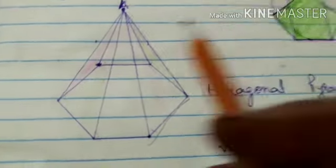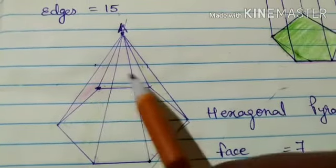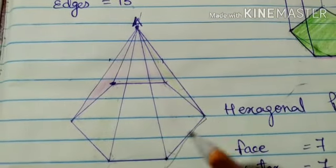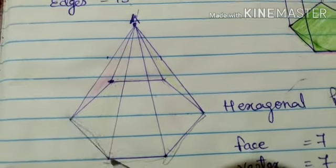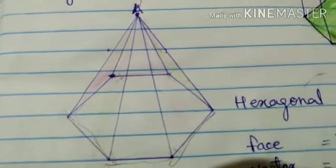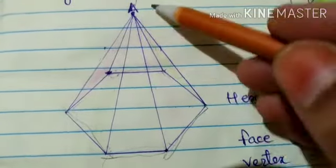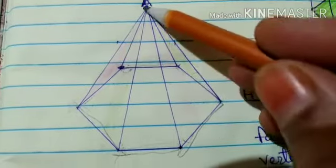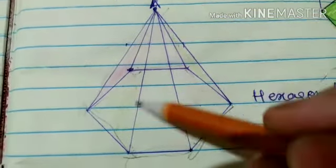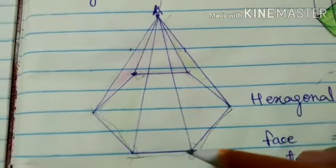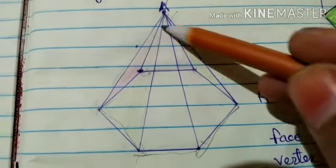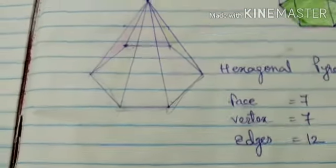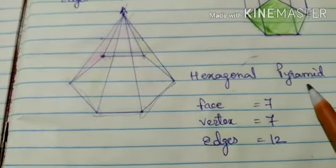Now how many edges are there in a hexagonal pyramid? So it is 1, 2, 3, 4, 5 and it is 6. Then we have to join from the top to each point: so it is 7, it is 8, then you can see it is 9, 10, 11 and at last 12. So there are 12 edges in a hexagonal pyramid.